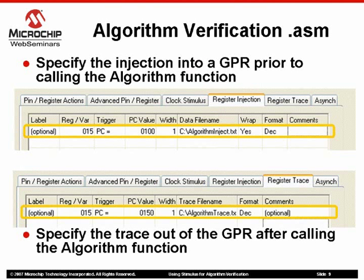Here we have both views of the register injection and register trace tabs for the .asm code example. Looking at the top half, specify the injection of the data into the GPR prior to calling the algorithm function. This can be done by specifying the address of the register or using a global symbol name if there is compiled code. For the PC value, here we used the absolute address, but you could also select a label.